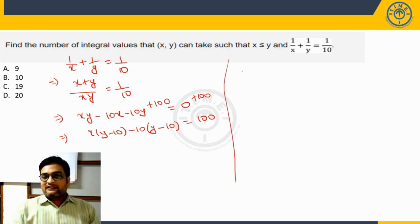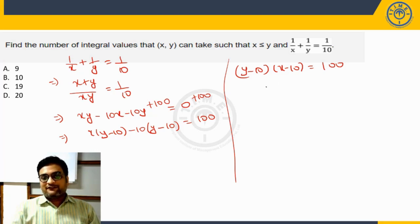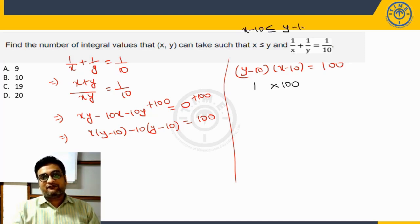This equation will change into y minus 10 common, left with x minus 10. Since x and y are integral values, integer values, x minus 10 and y minus 10 are also going to be integer values. So that means product of two integers is becoming 100. If x is less than or equal to y, that naturally means x minus 10 will be less than or equal to y minus 10.